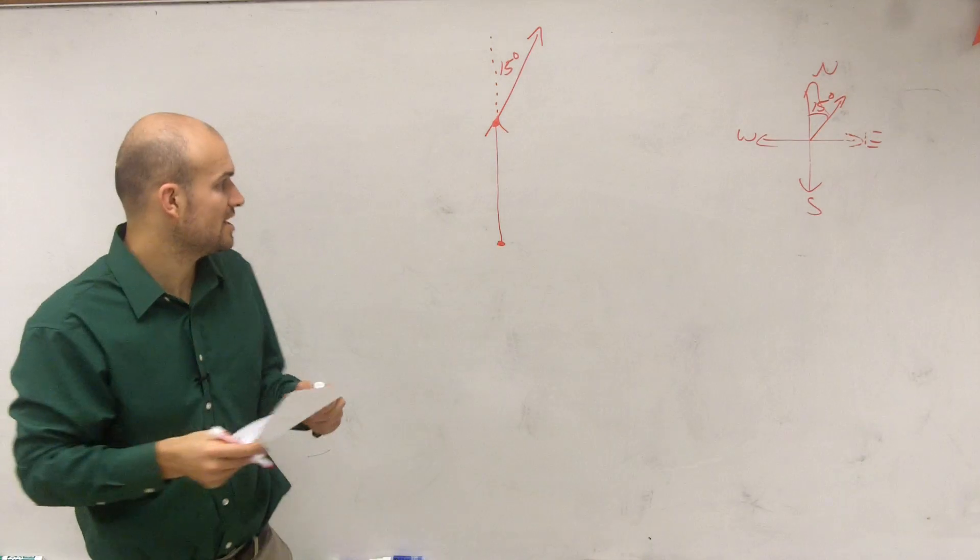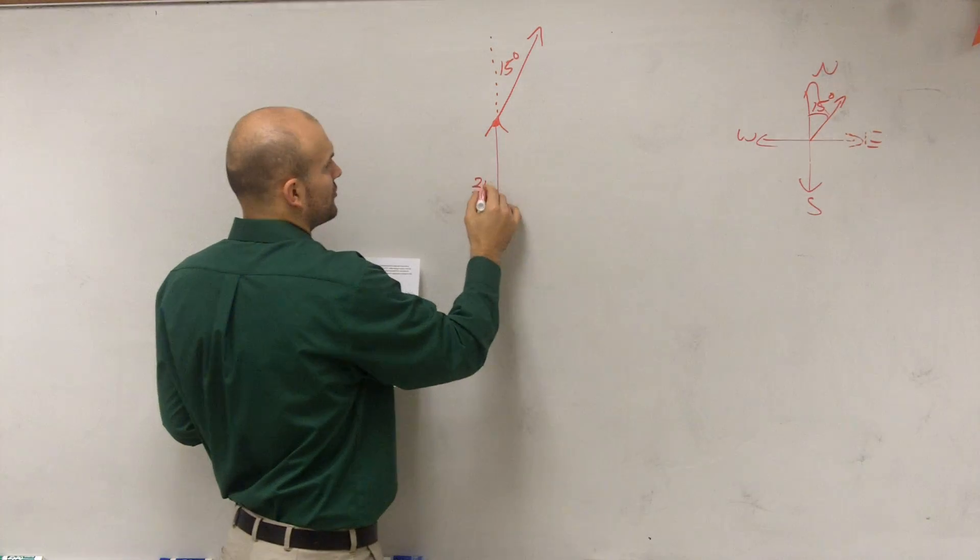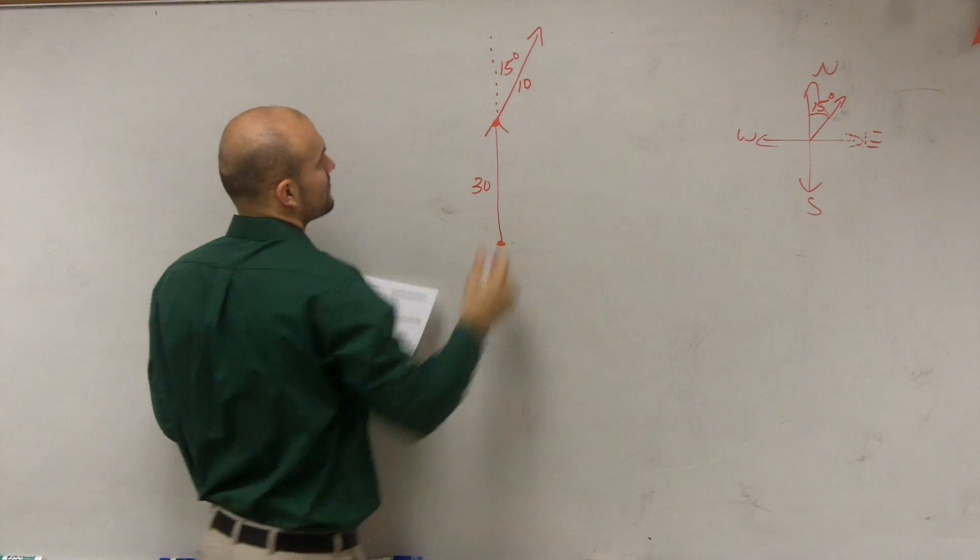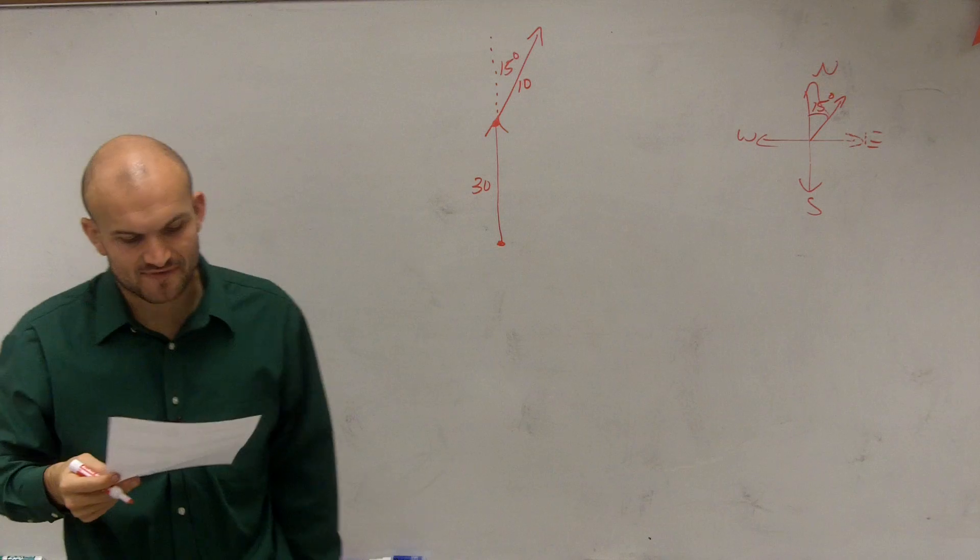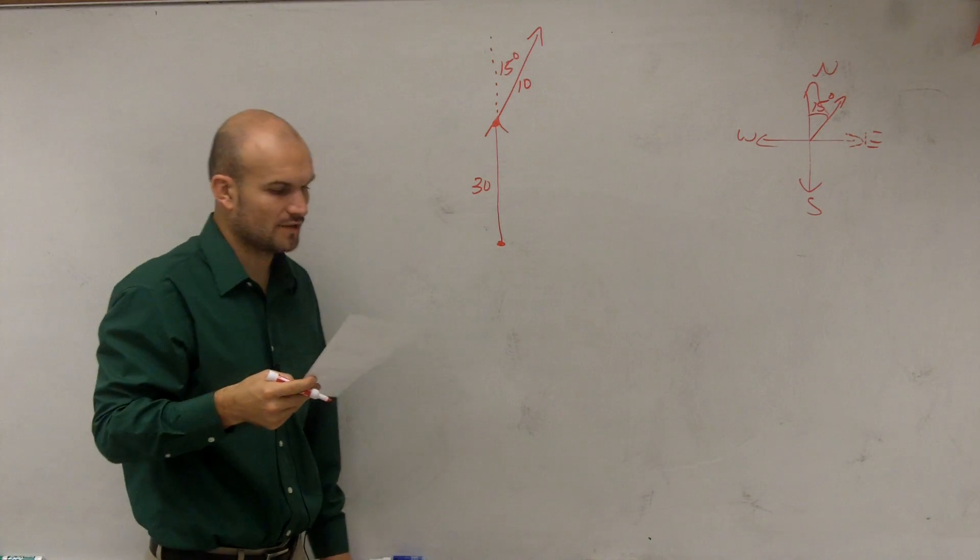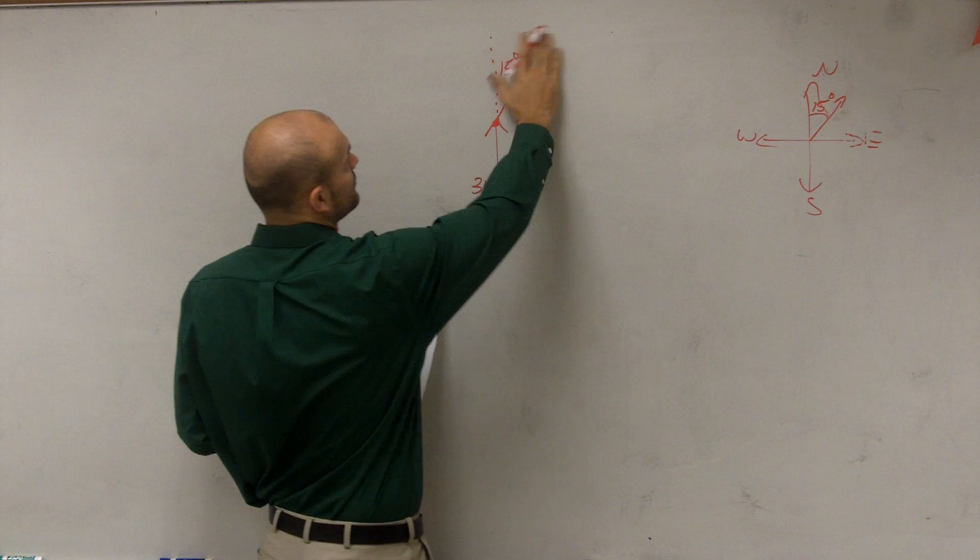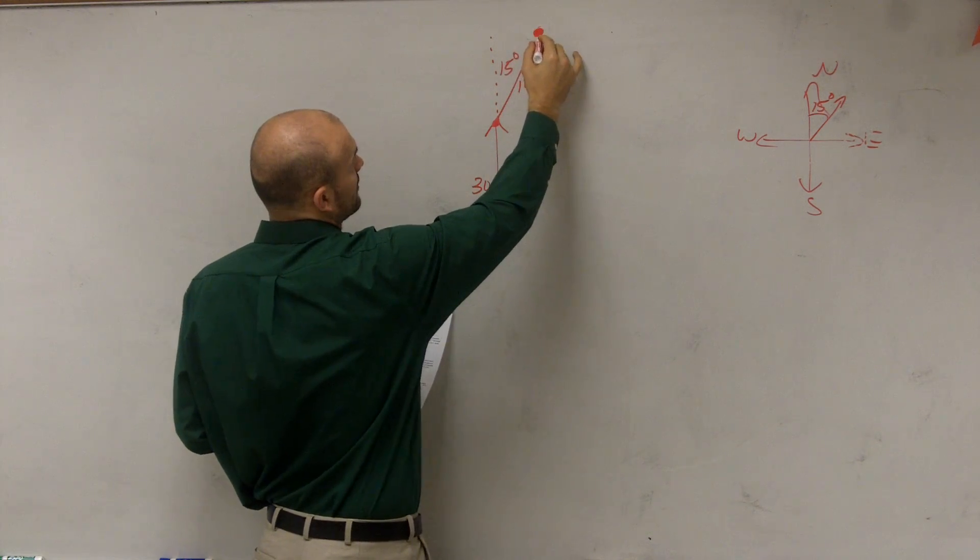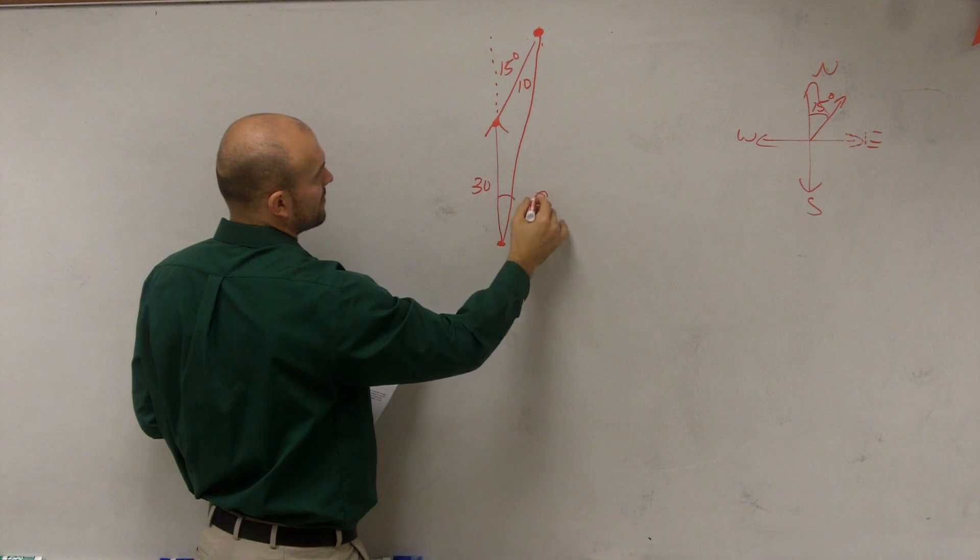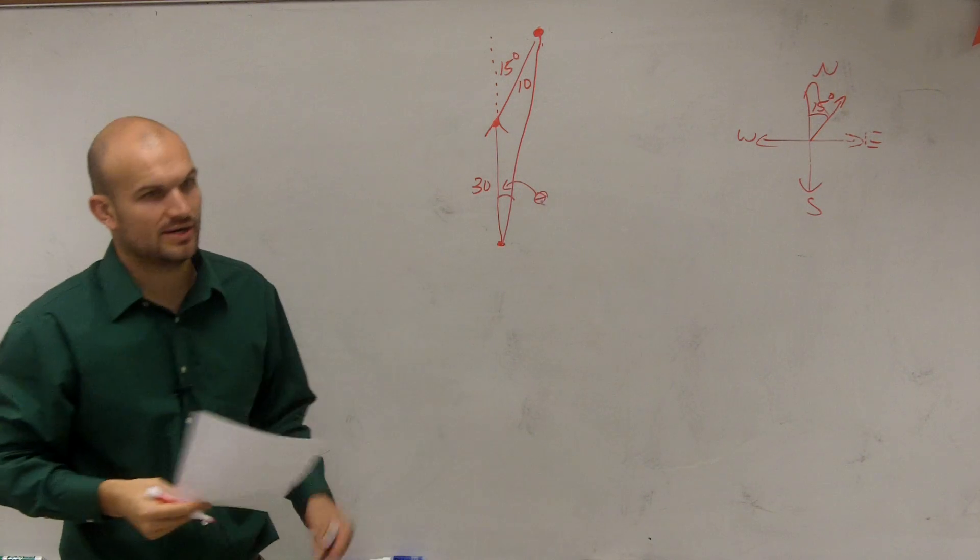And it says it goes there for, so travels here 30 nautical miles, and then I've traveled here 10 more nautical miles. And what it's asking us is find the ship's bearing from the port of departure. So now the ship is like right here, and what we want to do is we want to find theta, which is that bearing.